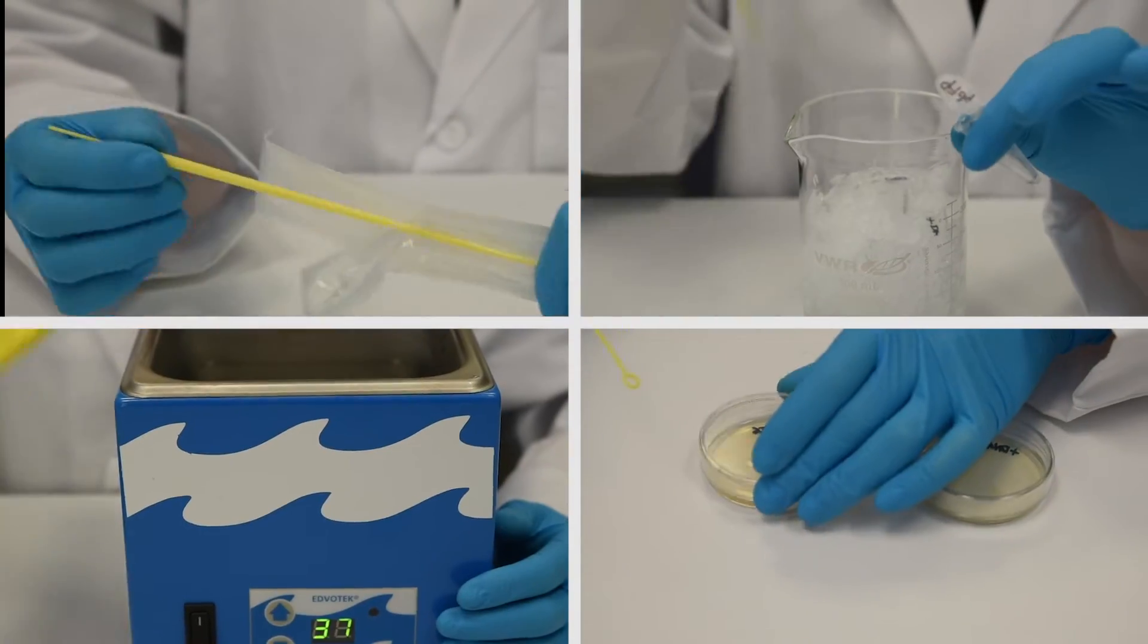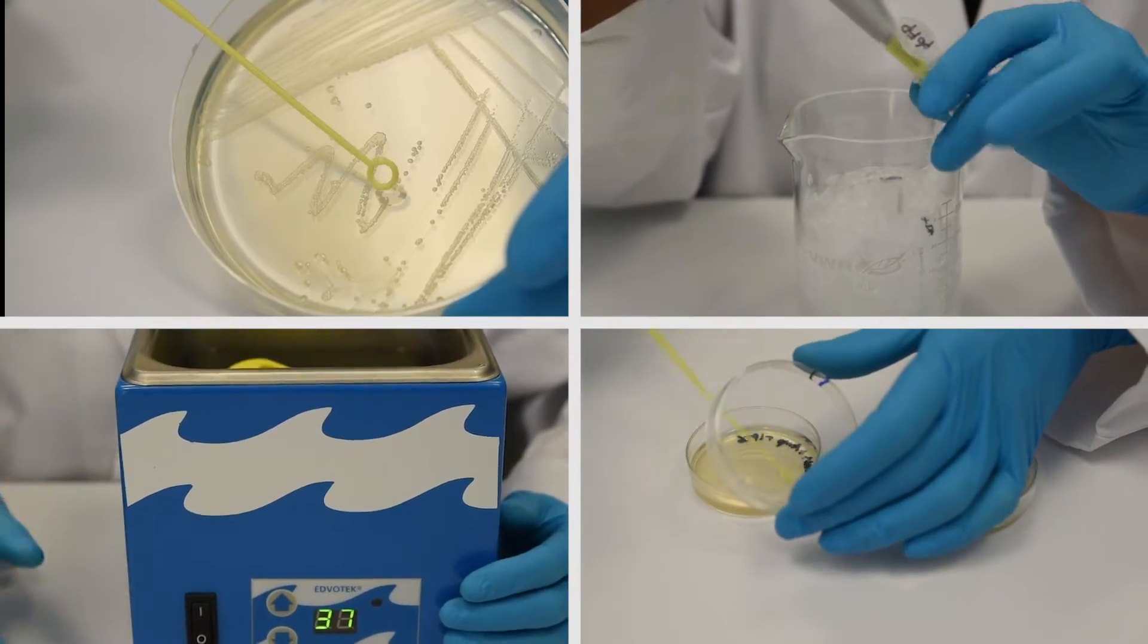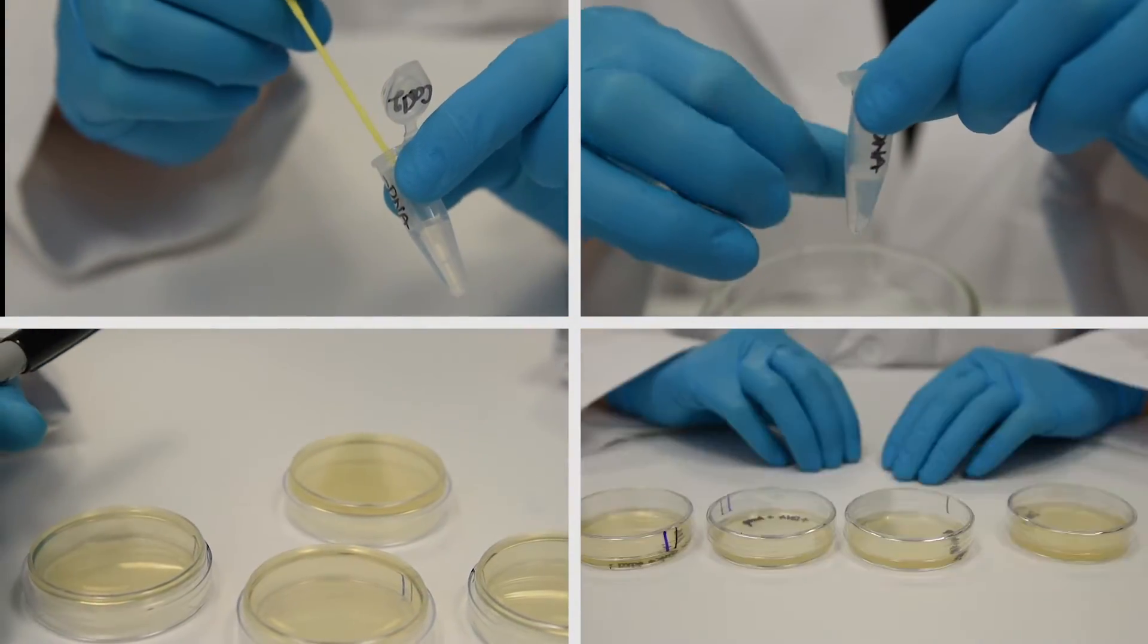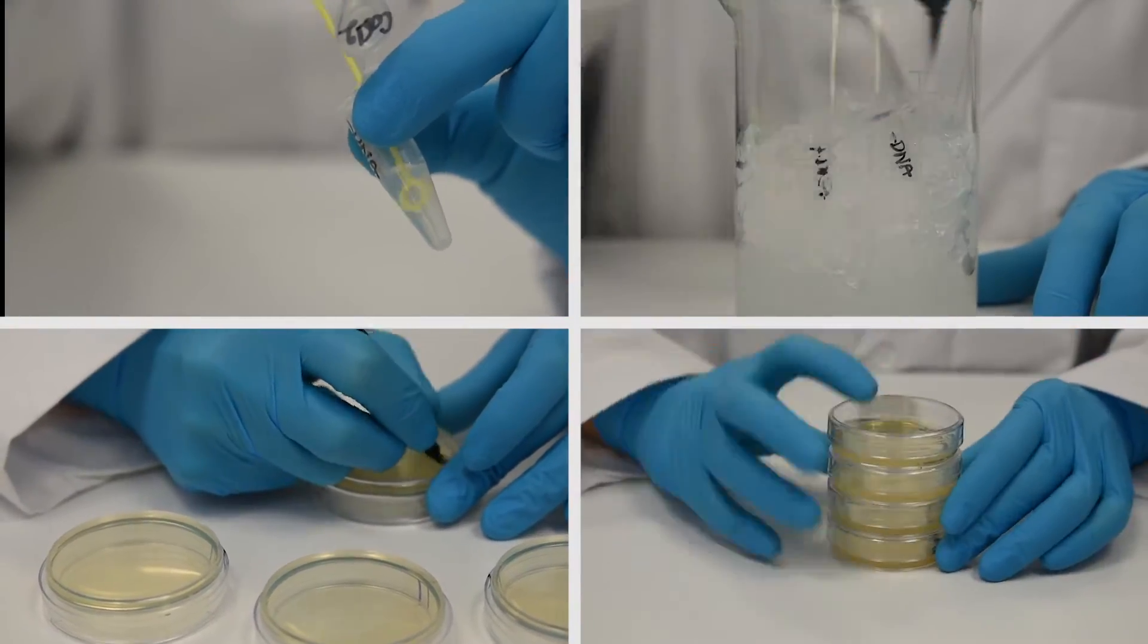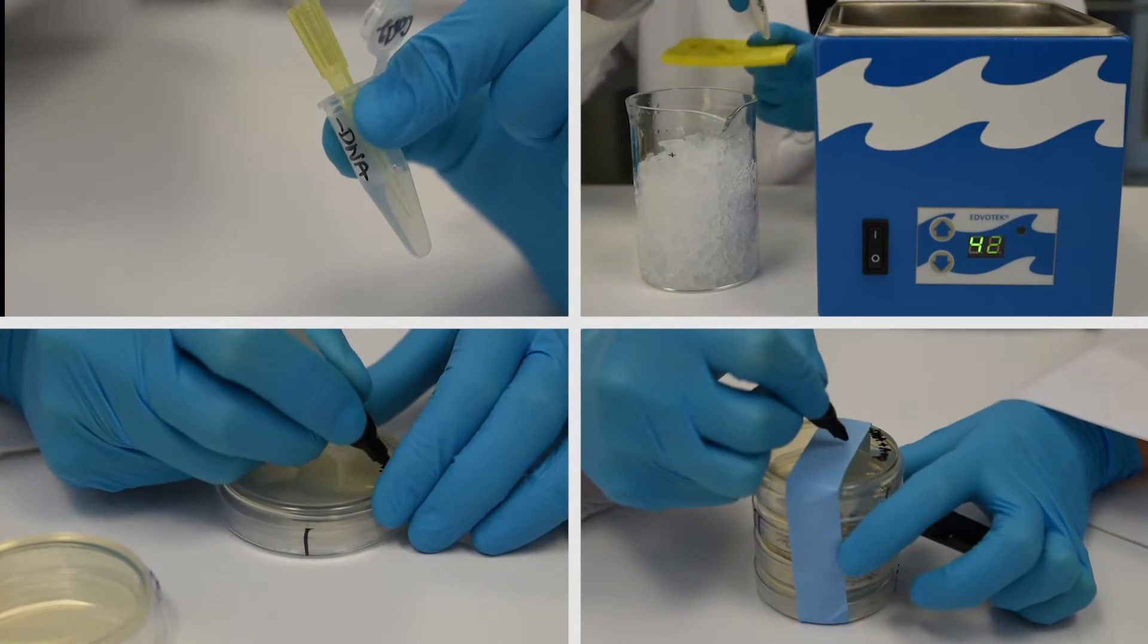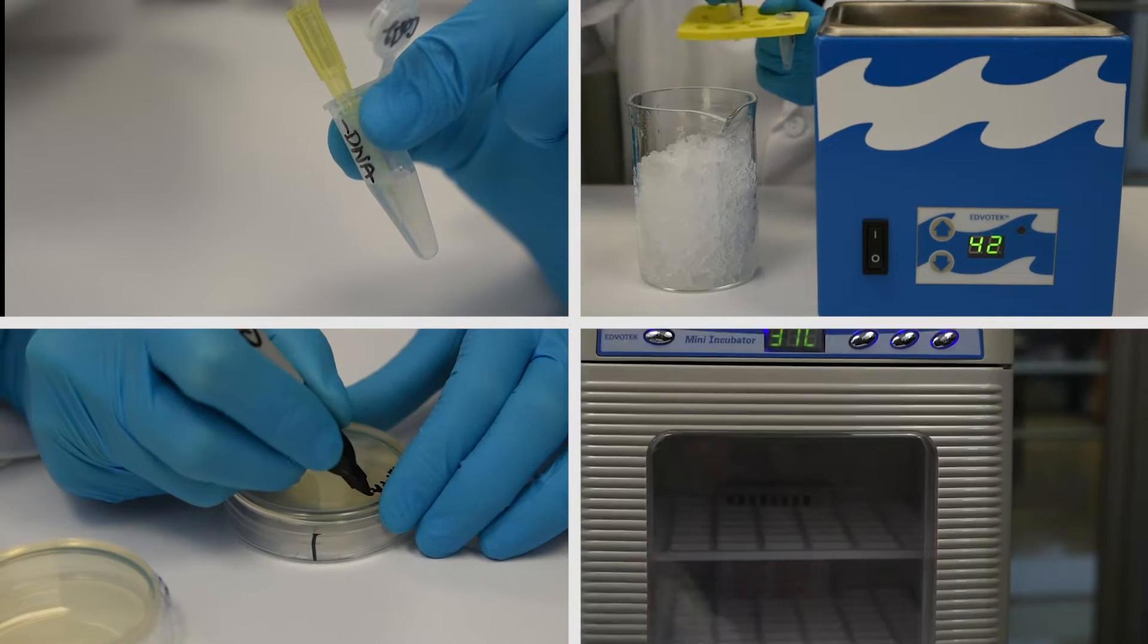In Module 1, you will transform the GFP host E. coli bacteria with the P. fluoro-green plasmid. The host bacteria will be grown for 18 to 22 hours on LB agar source plates, collected using a sterile loop and made competent in calcium chloride.